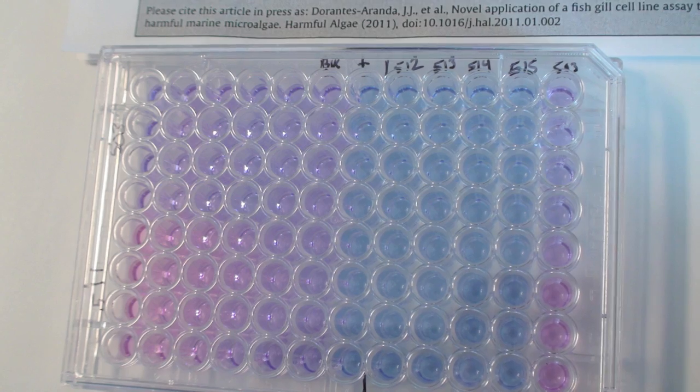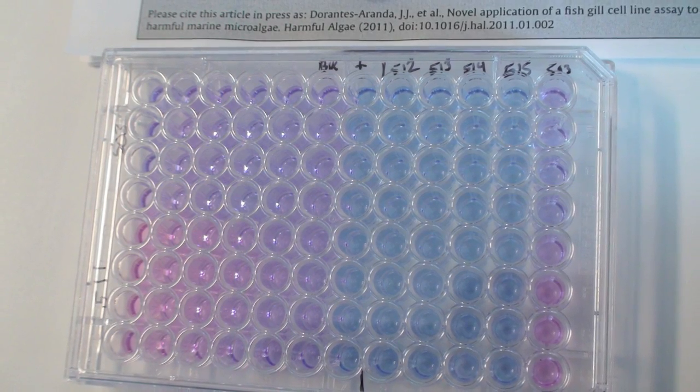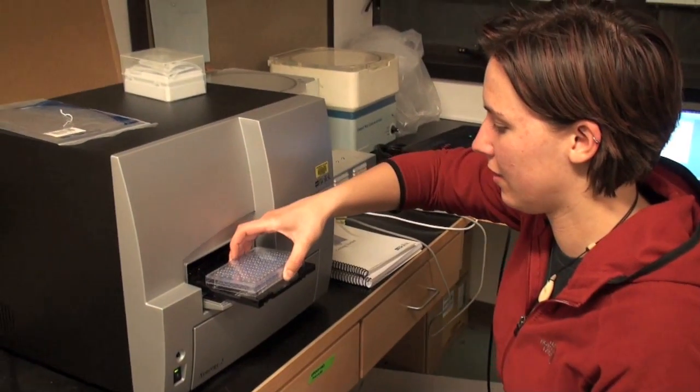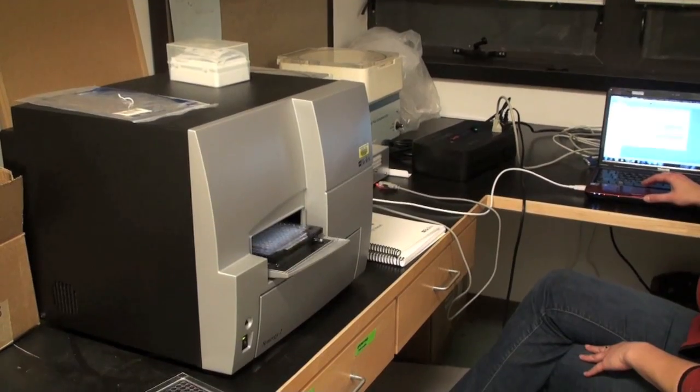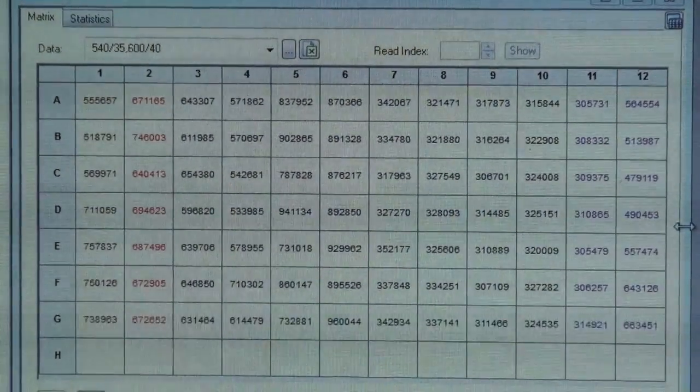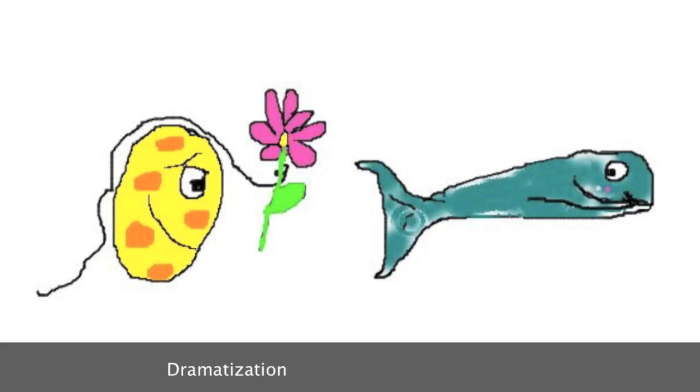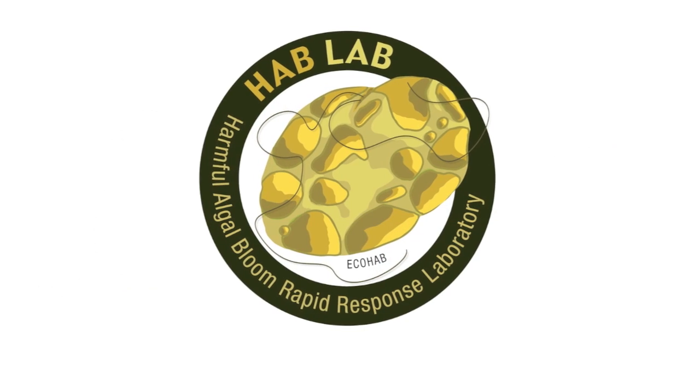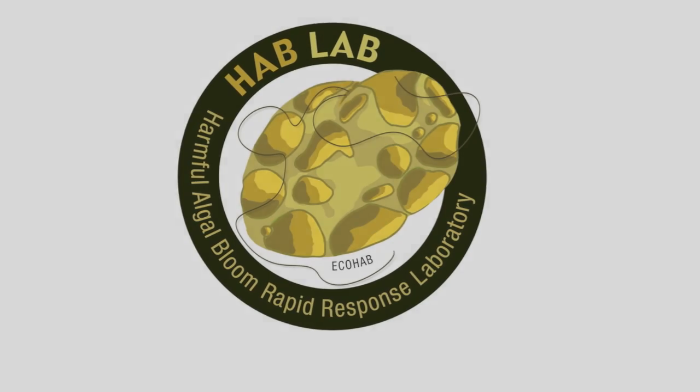The plate is left in the dark for another few hours while it changes color, and is then read on a fluorescence plate reader for a precise measurement. These data are then analyzed to determine toxicity of the Heterosigma.